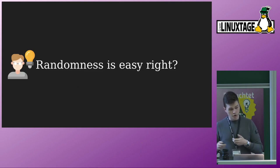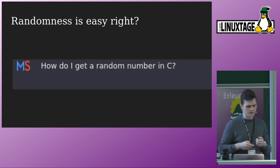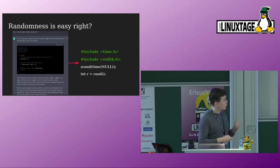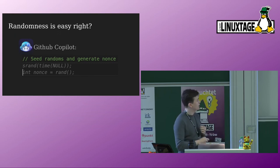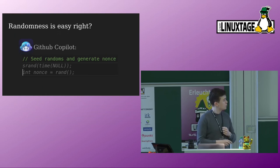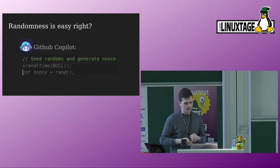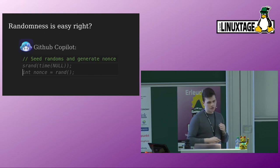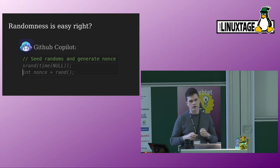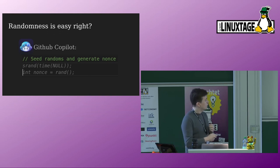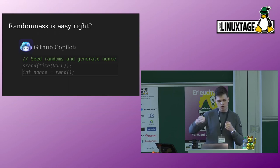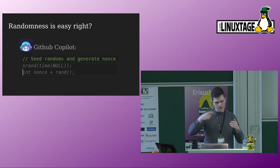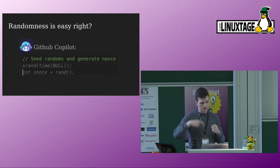Randomness for those nonces seems easy — if I ask ChatGPT how to get a random number in C, I get what looks like a perfectly fine random number. The same happens with GitHub Copilot. But this type of random number generation is only okay if we don't care about cryptography. For cryptography, seeding with time means I can predict all of your random numbers — the number of possible timestamps isn't too large, so I can iterate through them and guess your nonces. I can predict all of your future nonces.